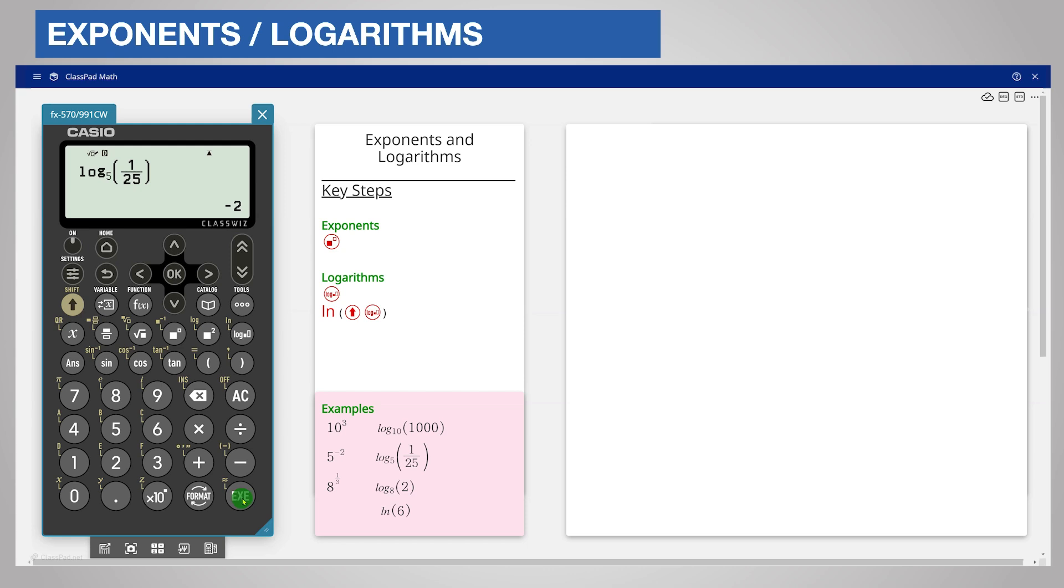To find log to the base 8 of 2, press the log base key as usual, enter the base 8 and then the value 2. The logarithm is 1/3rd.